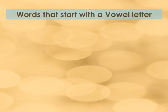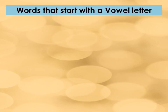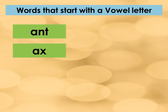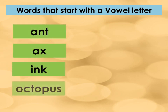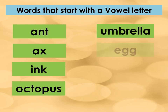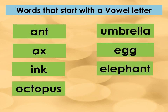These are examples of words that start with a vowel letter. We have ant, axe, ink, octopus, umbrella, egg, elephant, ox.